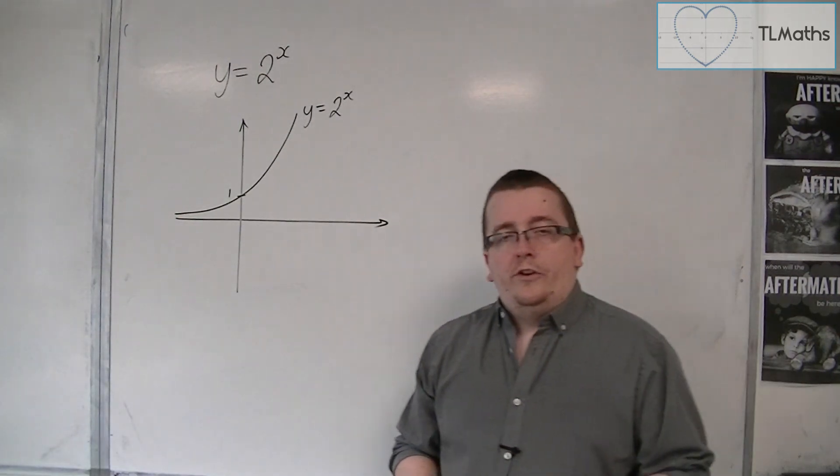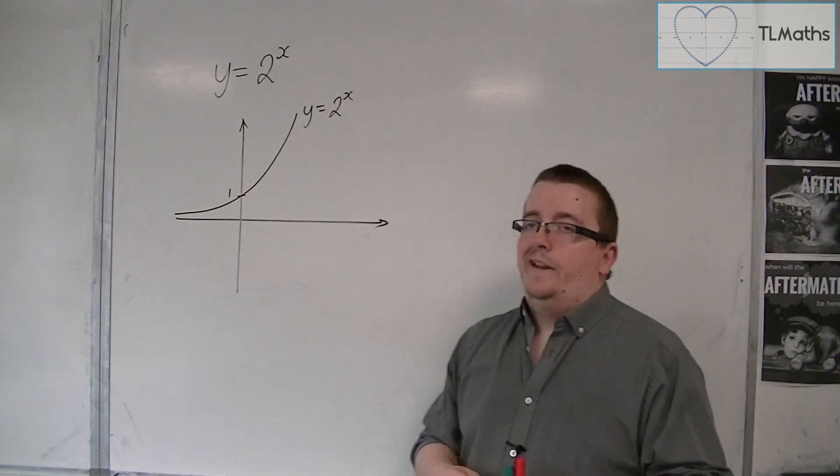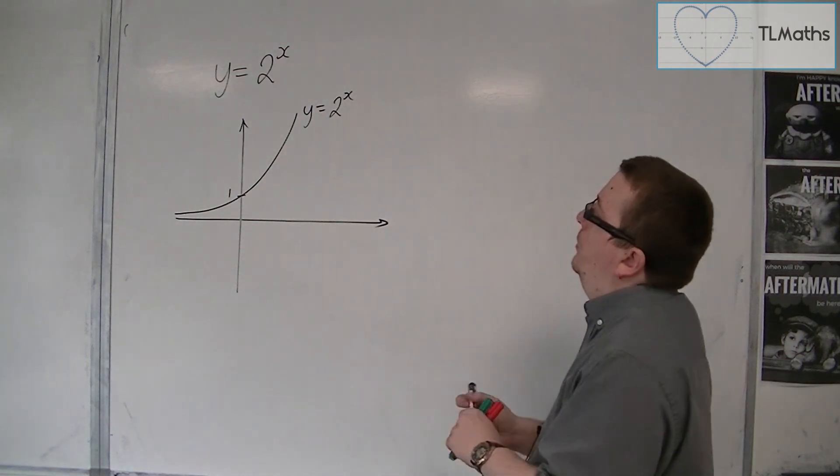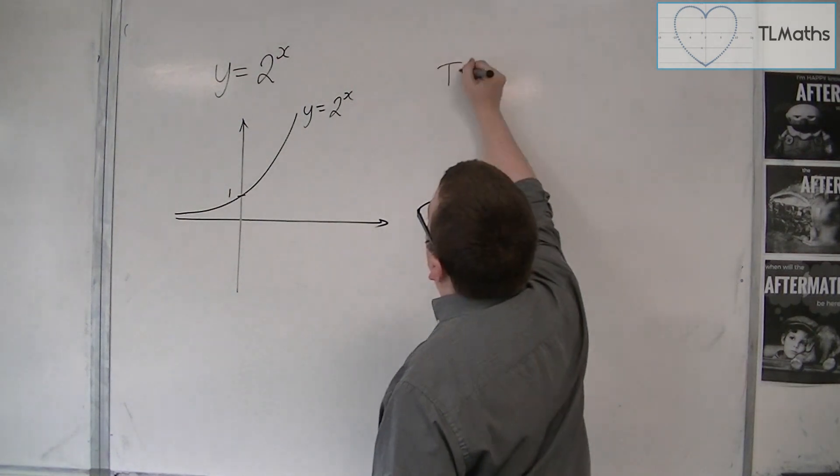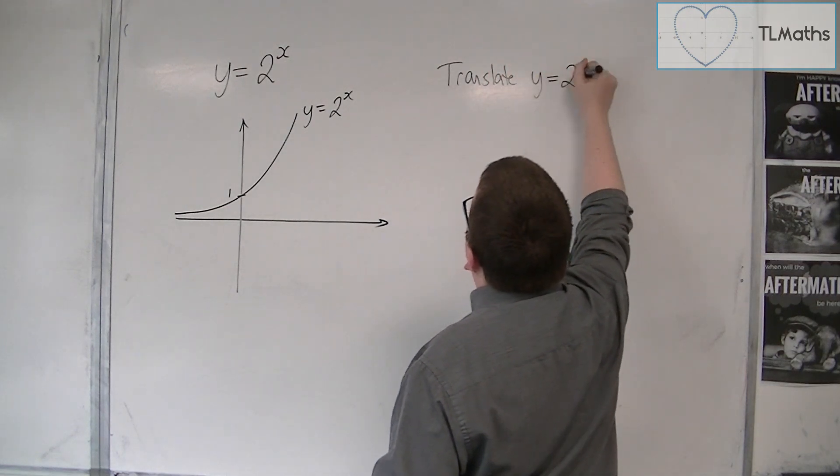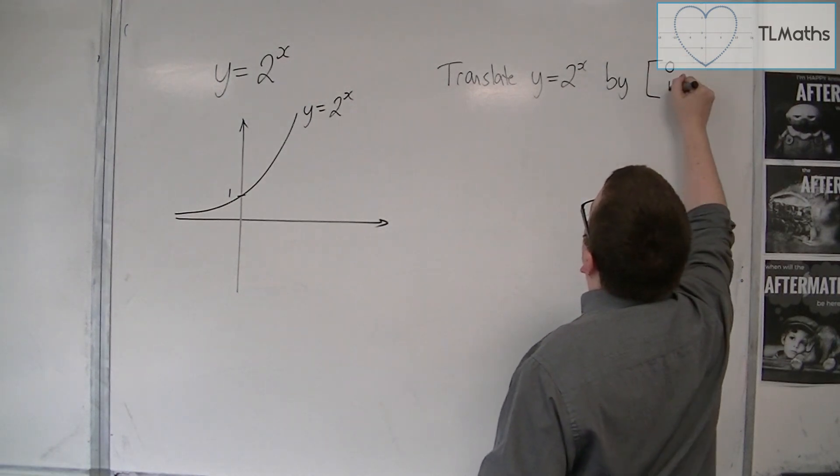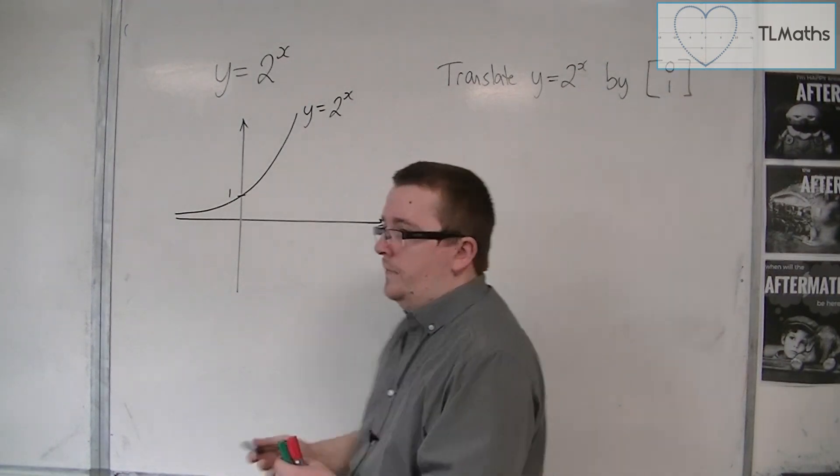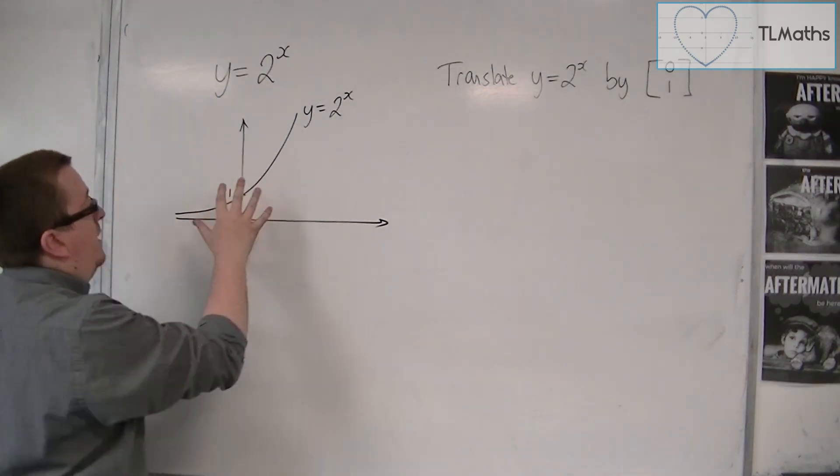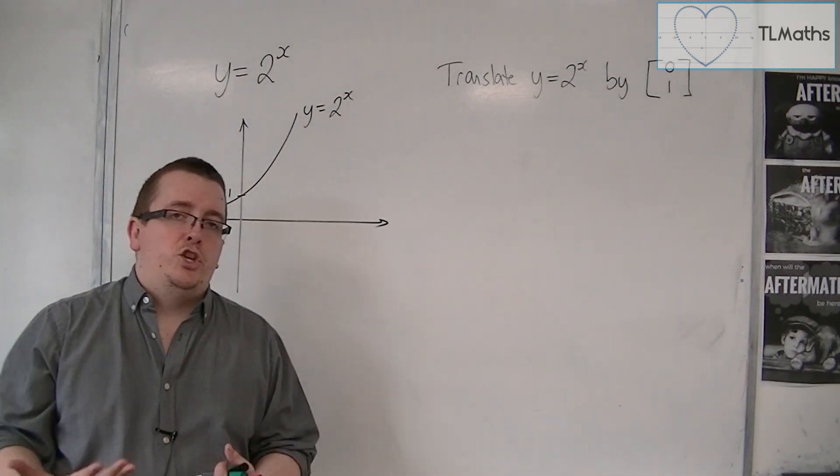Now, what we want to do is we want to perform a couple of translations on this curve. So, for example, we might want to translate the curve by the vector 0, 1. So, effectively, we want to move this curve up one unit because that's what a translation is.